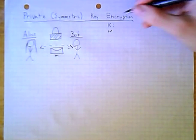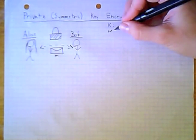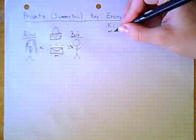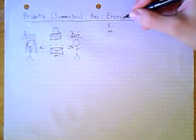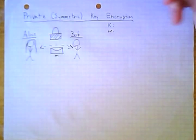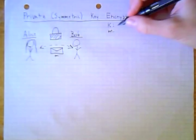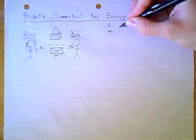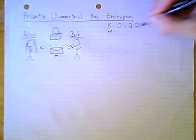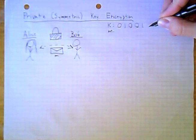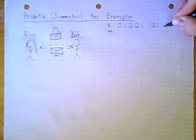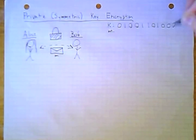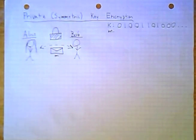The key is a predetermined string of binary bits, and binary bits are just zeros and ones. So let's generate a key. Let's say 0, 1, 0, 0, 1, 1, 0, 1, 0, 0, 0 ... so the key goes on.